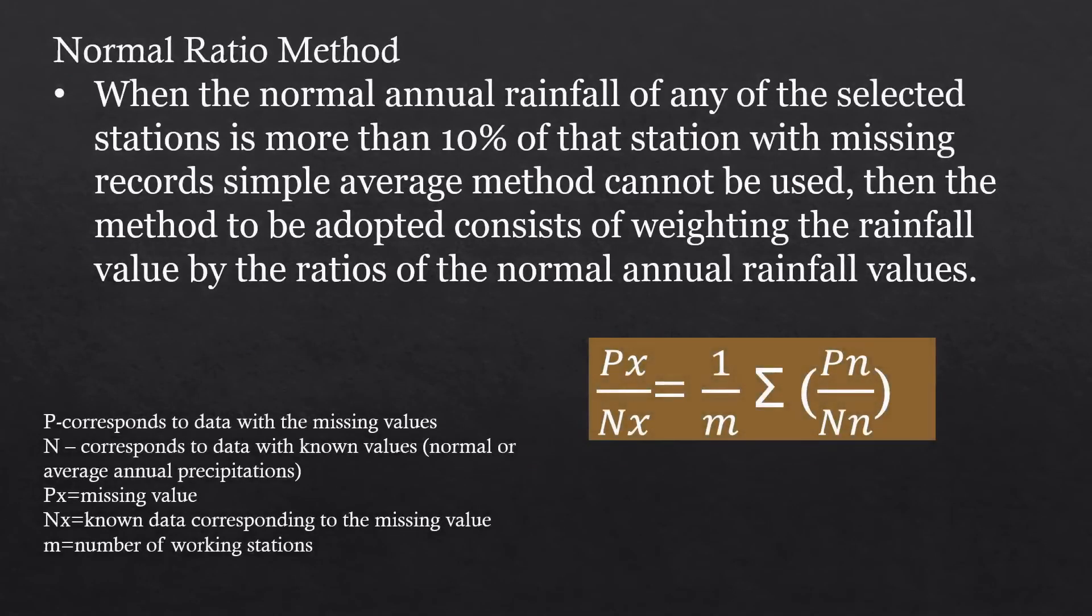Now for the next one, we have the Normal Ratio Method. This is applied when the normal annual rainfall of any selected station is more than 10% of the station with missing records. In this case, the simple average method cannot be used, so we will now use weights and ratios to solve the missing value. Essentially, we are taking the ratio of the missing value to the known value, which is the normal or average annual precipitation. N stands for normal annual precipitation, and M is still the number of working stations. PN corresponds to the row with missing values, while N sub N corresponds to data with normal annual precipitation.